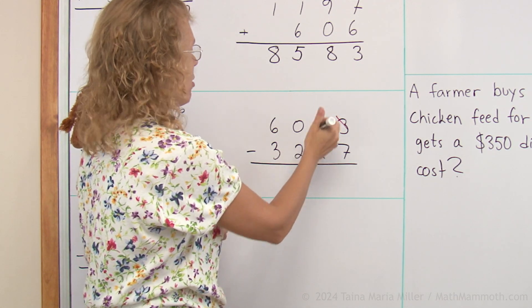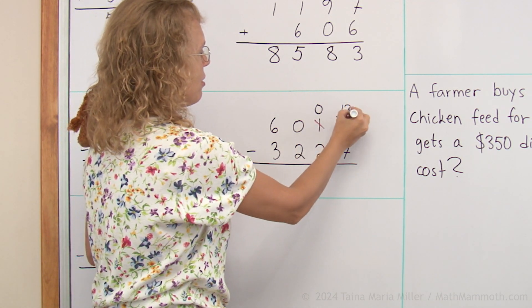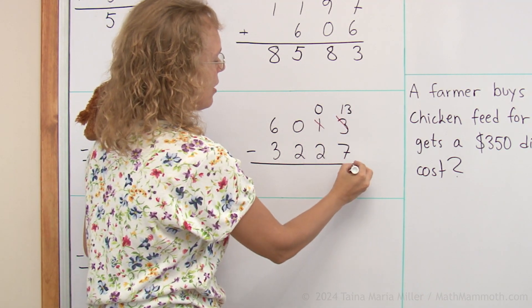Get one of the tens, the only ten, leaving zero tens, and then thirteen here. Thirteen minus seven is six.